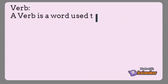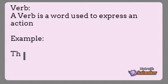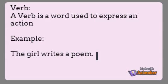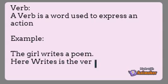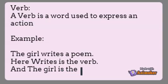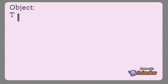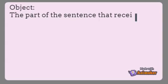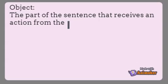The verb is a word used to express an action. For example, 'The girl writes a poem' — here 'writes' is the verb and 'the girl' is the subject. The object is the part of the sentence that receives an action from the verb.